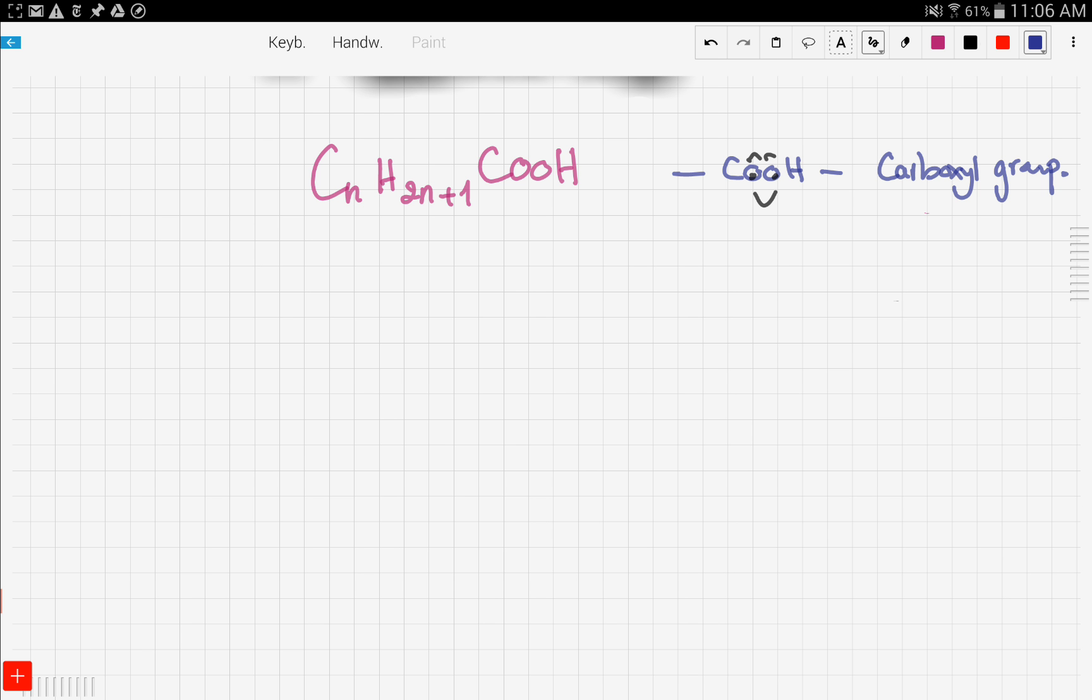In the previous videos regarding alcohols, we said that if we oxidize ethanol we get a carboxylic acid, and it's ethanoic acid. So let's remind ourselves of this reaction.